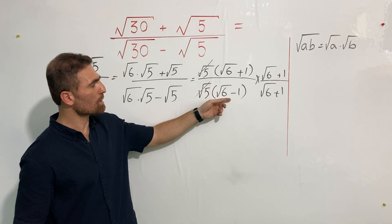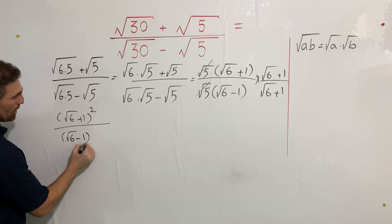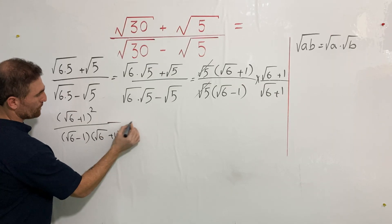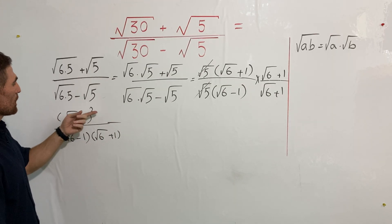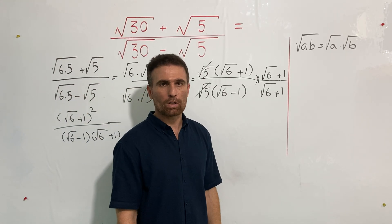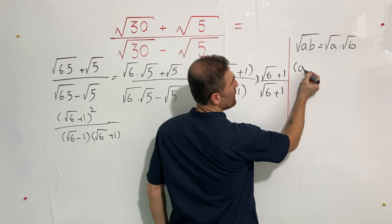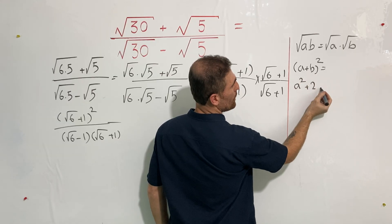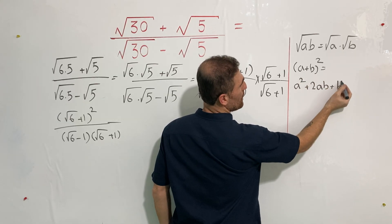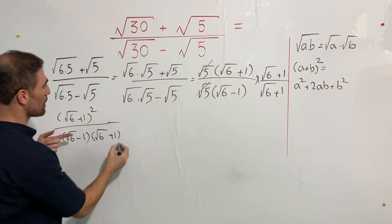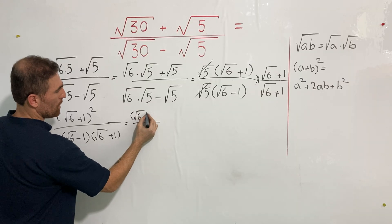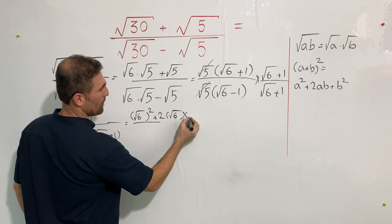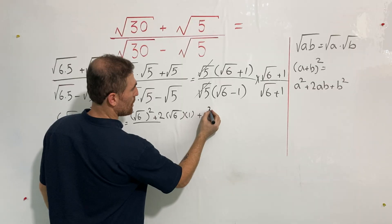On top we have square root of 6 plus 1 times square root of 6 plus 1, so it can be written as (square root of 6 plus 1) squared. On the bottom we have square root of 6 minus 1 times square root of 6 plus 1. To expand the numerator I'm going to use the algebraic identity (a + b)² = a² + 2ab + b².